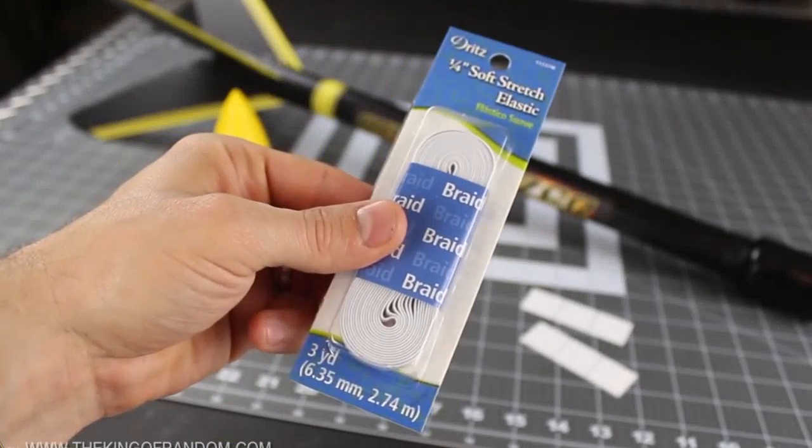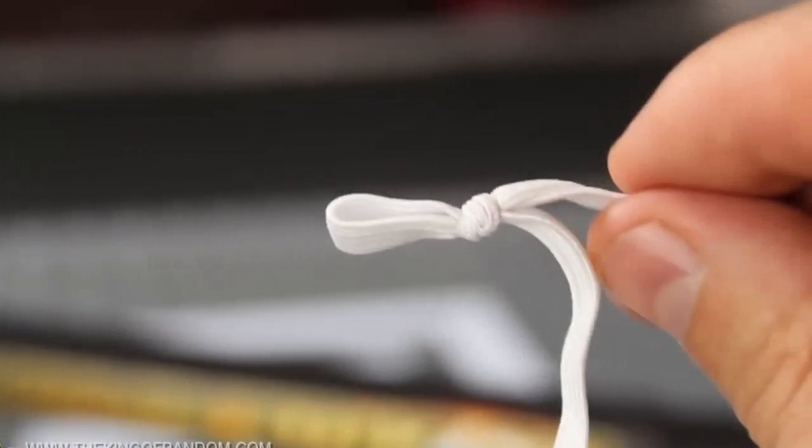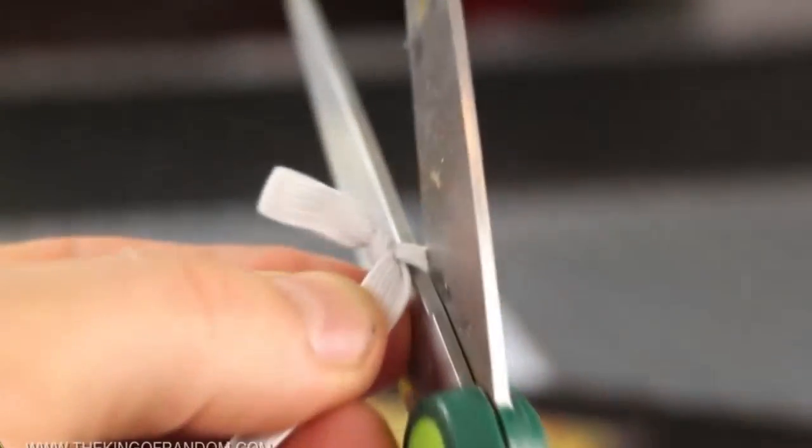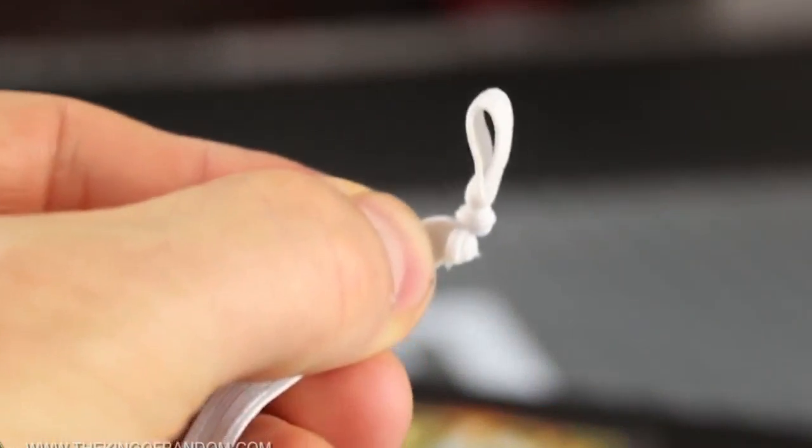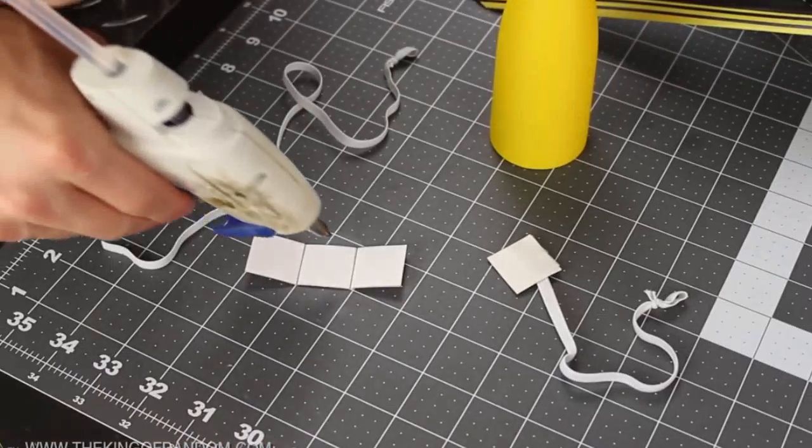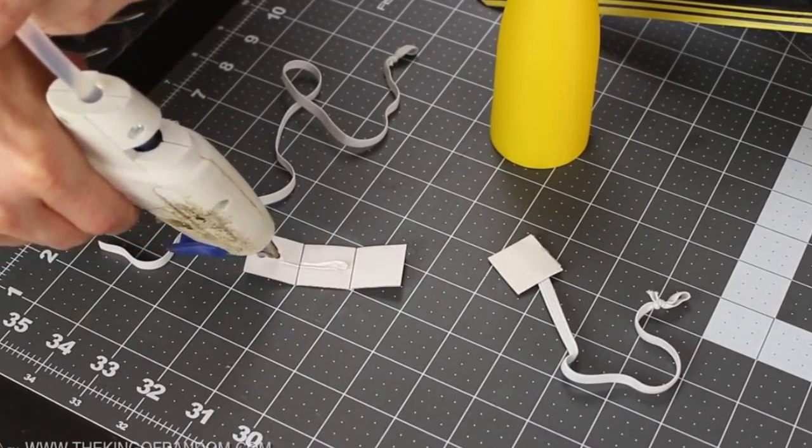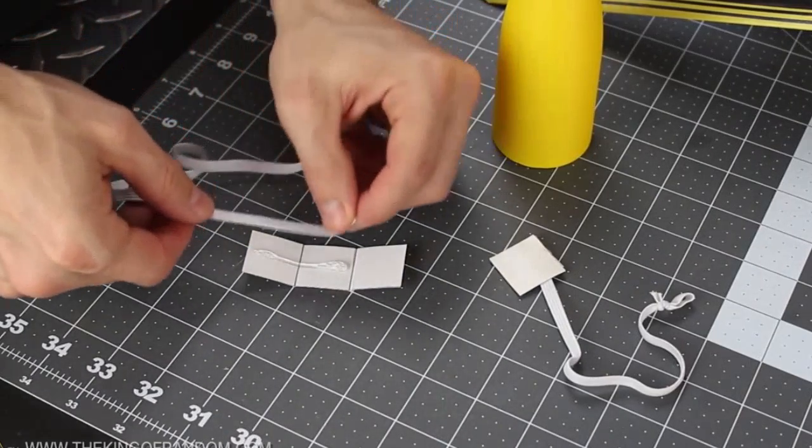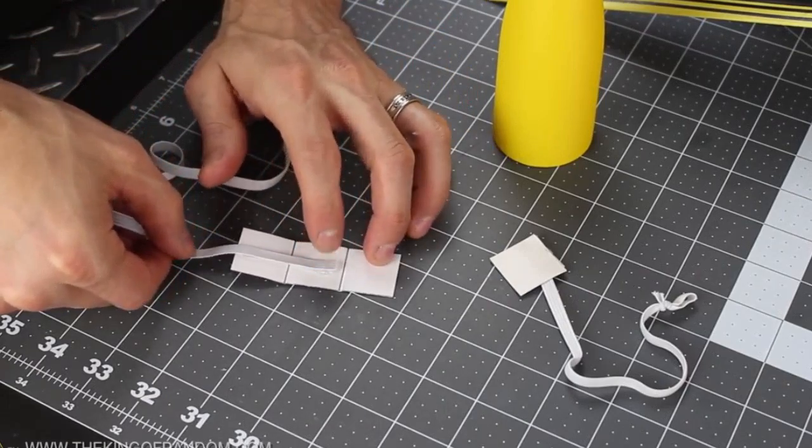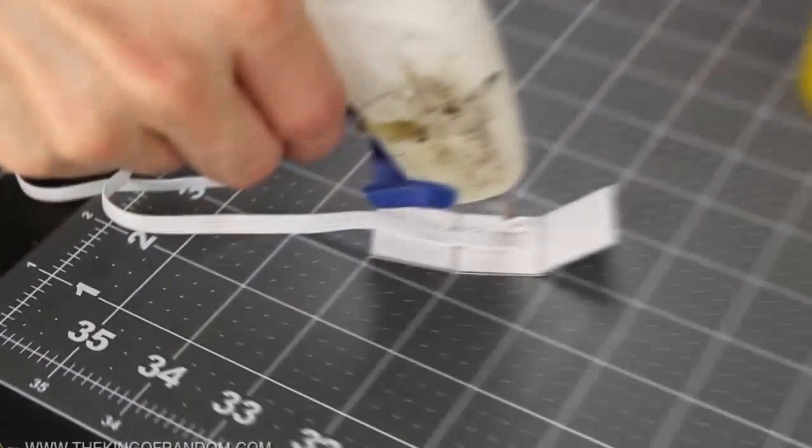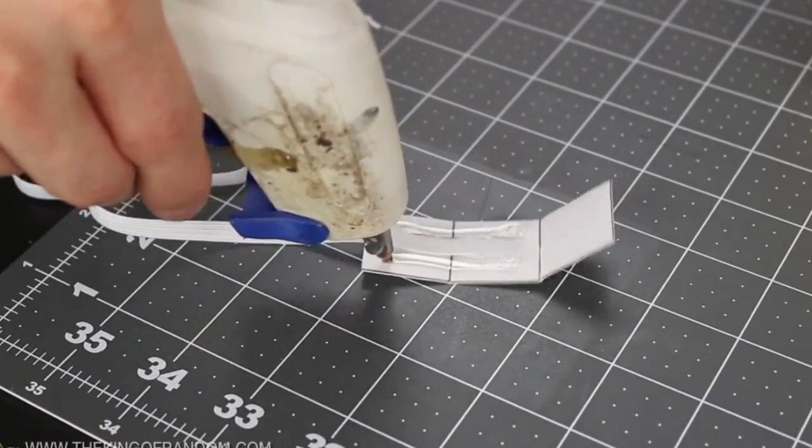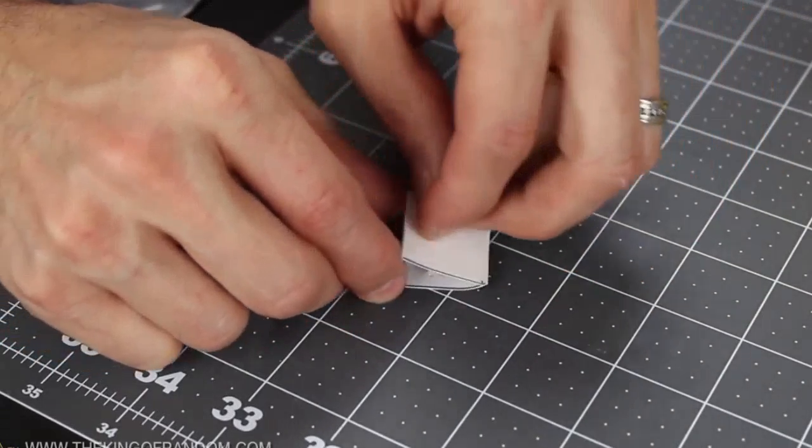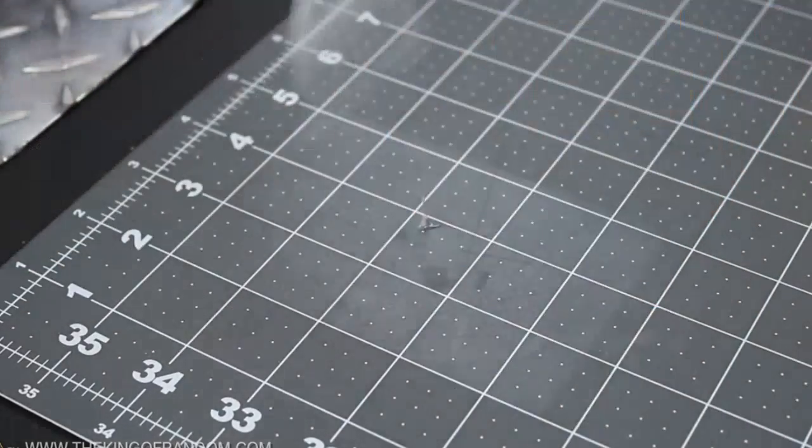I got some quarter inch braided elastic cording from the craft section of a superstore, and tied a simple knot into the end so it formed a loop. Now the tighter you can pull the knot, the better it'll hold, and to clean it up a bit, just use a pair of scissors to trim off the excess. Measure and cut the other end at 8 inches, then go ahead and lay a bead of hot glue down the center of one of the poster board reinforced shock cord mounts. The open end of the elastic cord needs to be pressed into the glue so it stretches across two of the squares, and it's helpful to lay two more beads of glue along either side of the cording so you can fold the end piece into the center, trapping the cord and glue inside. Fold it again so you're left with a single square, then press it together firmly to finish it off.